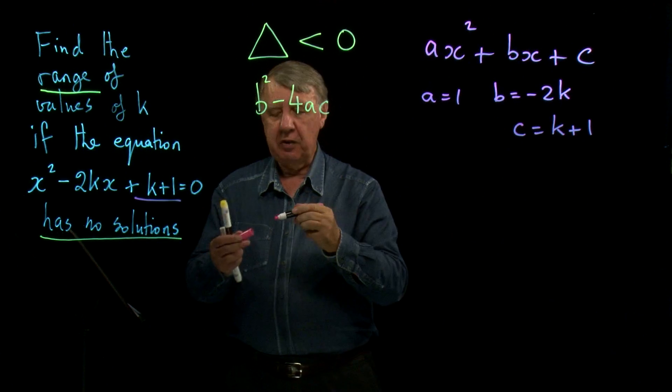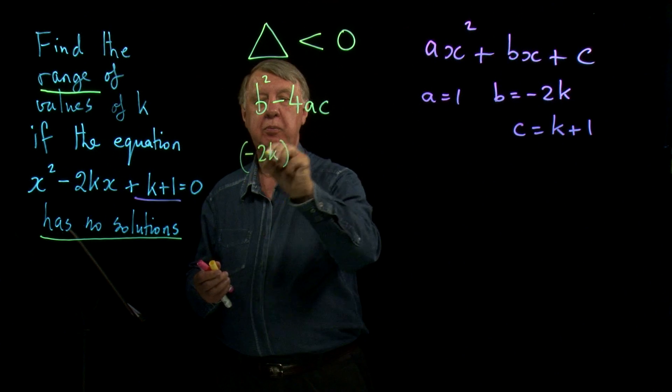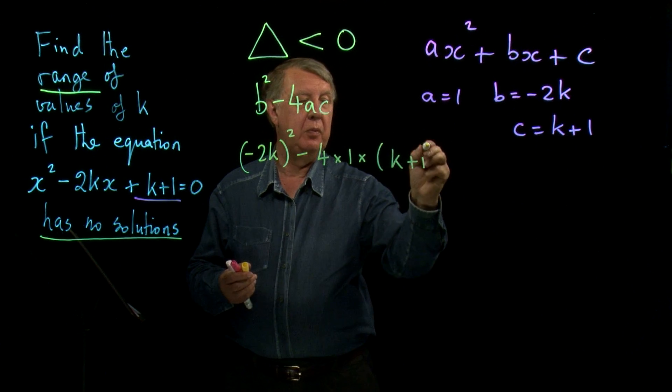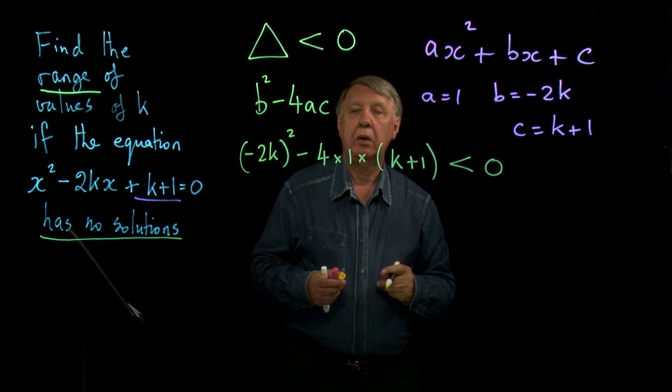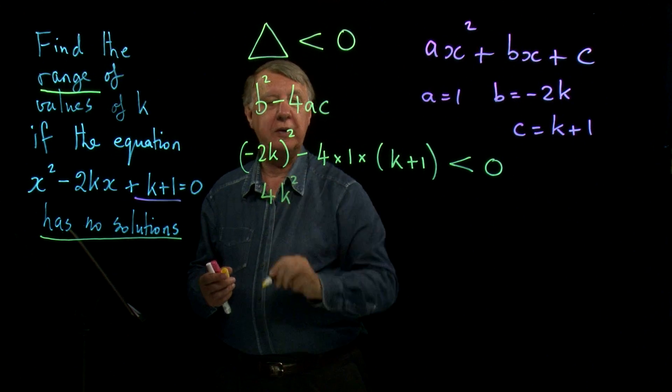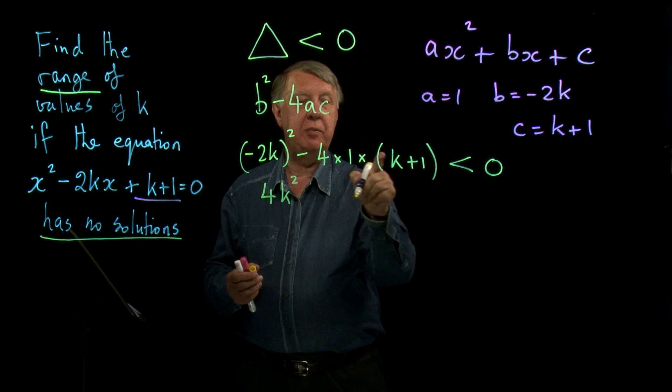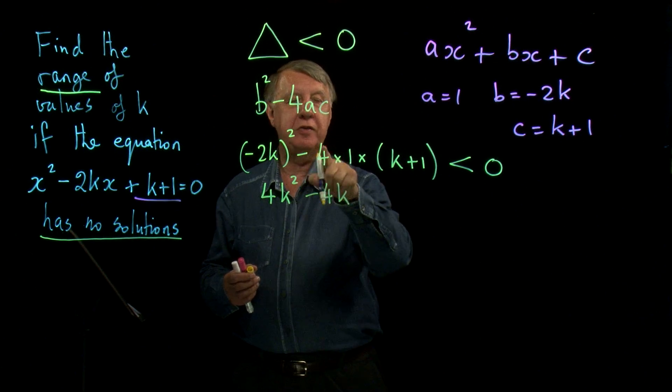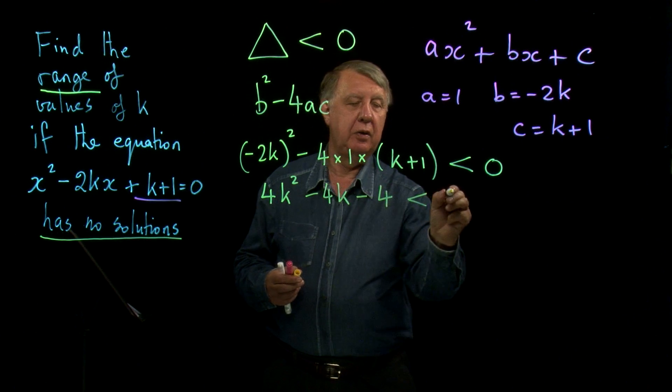Right. So the discriminant then. b squared. Negative 2k squared. Minus 4 times a times c. And that has to be negative. Square negative 2k is positive 4k squared. Minus 4 times this bracket. So it's minus 4 times k which is minus 4k and minus 4 times 1 which is minus 4. And that has to be negative.